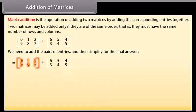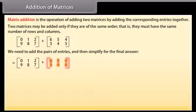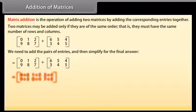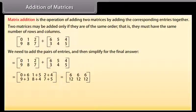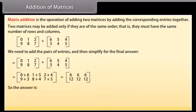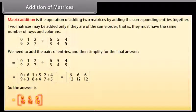Adding the two 2 by 3 matrices row-wise: first matrix has 1st row [0, 1, 2] and 2nd row [9, 8, 7]; second matrix has 1st row [6, 5, 4] and 2nd row [3, 4, 5]. Adding corresponding entries: 1st row gives [0+6, 1+5, 2+4] and 2nd row gives [9+3, 8+4, 7+5], which equals 1st row [6, 6, 6] and 2nd row [12, 12, 12].